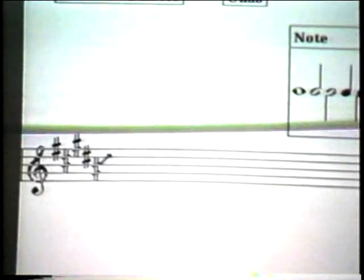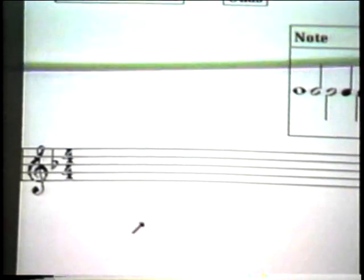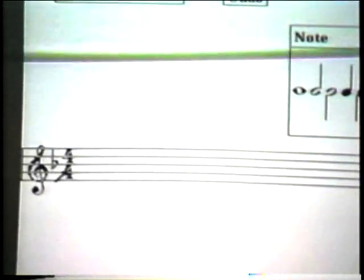A K gives me a new key signature. As long as I hold the mouse button down, moving the mouse up gives me sharps, and down gives me flats. The C gesture gives me a new time signature. After recognition, X and Y control the numerator and the denominator of the time signature.